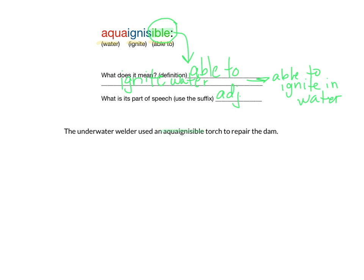Here's my sentence: 'The underwater welder used an aqua ignisible torch to repair the dam.' It's an adjective, so I have to think about what it's describing. The word aqua ignisible is describing the noun torch, because this is a kind of torch that you would need to use underwater. My other clues that let you know it has something to do with being underwater are 'underwater welder' and 'repairing a dam.' All of those context clues help you understand that this make-believe word makes sense and can be used in a sentence.